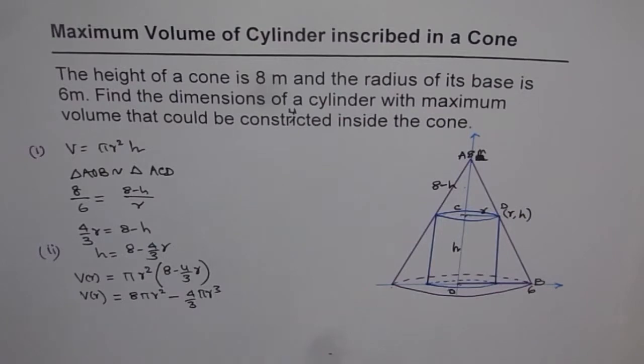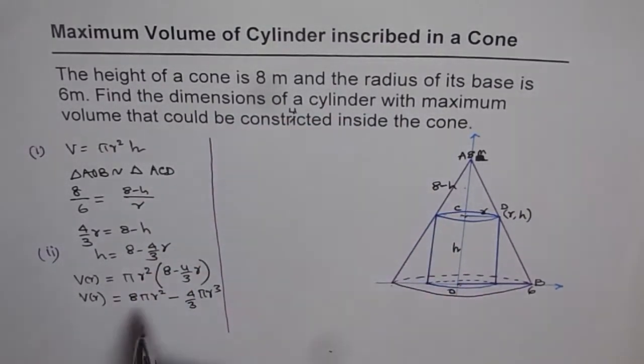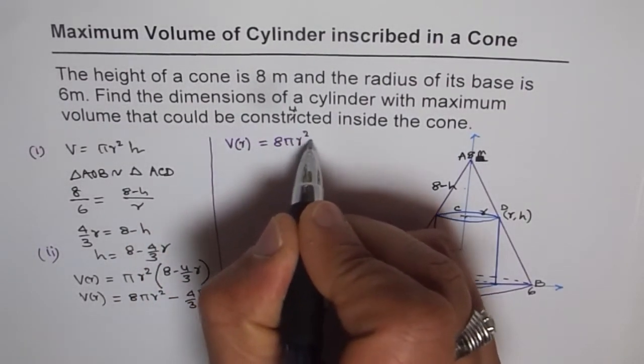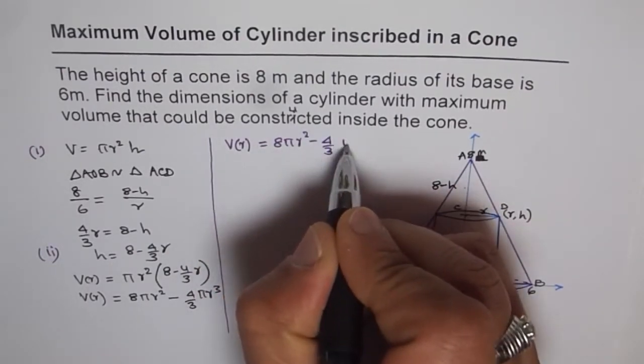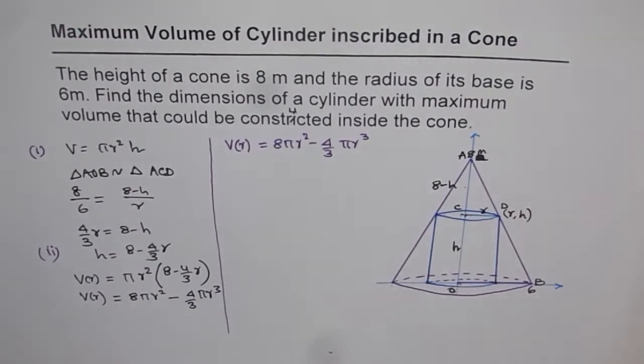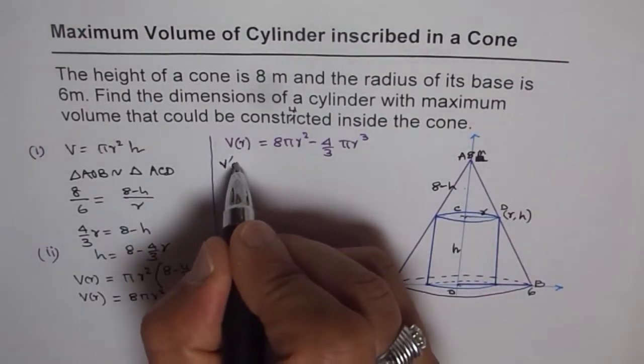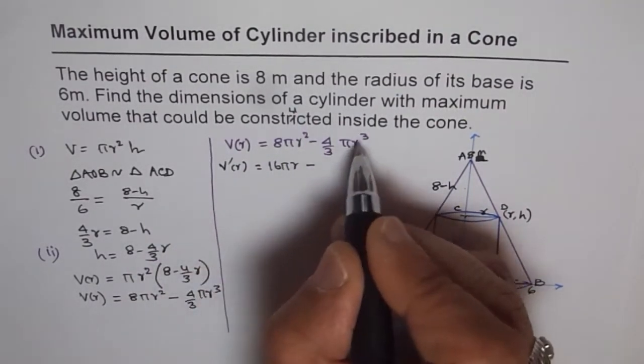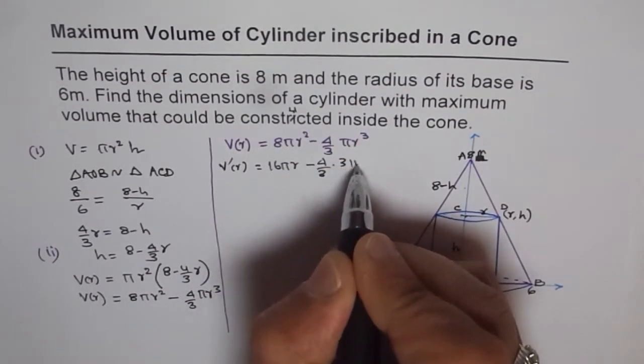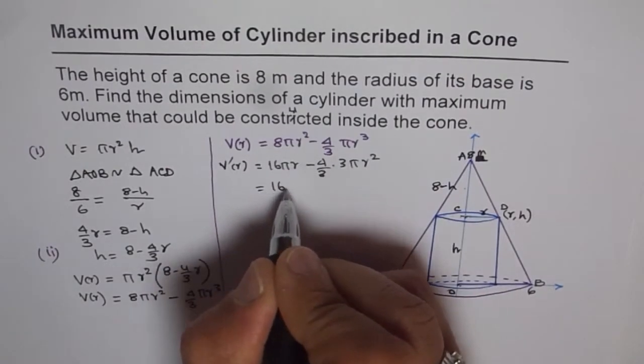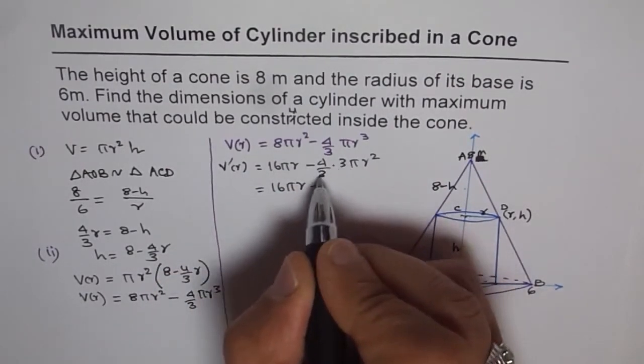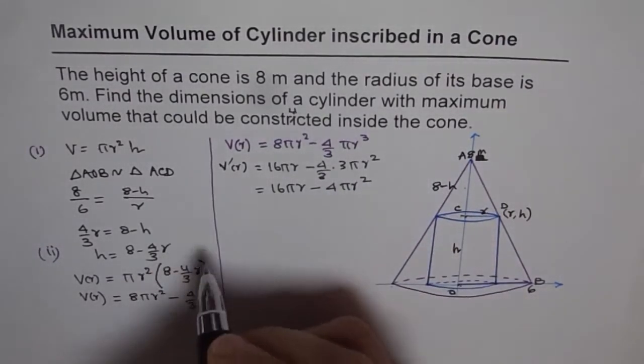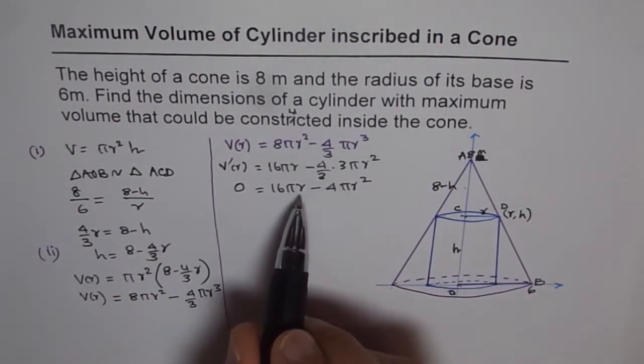Now, let's find out. We'll do on this side. So we have volume with respect to radius equals to 8πr² minus 4/3 πr³. Now, what is v dash equals to 8 times 2, 16πr minus 4/3 times 3 πr². Which is 16πr minus, 3 and 3 cancels out, 4πr². Now, for the critical number, v dash should be equal to 0. So let's equate it to 0 and find the value of r.